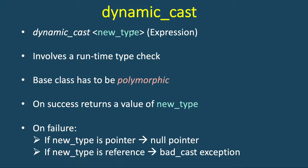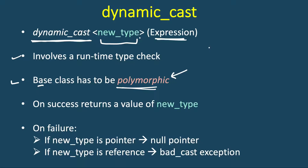Now let's look at the syntax of dynamic_cast, which is similar to other casts. We have the dynamic_cast keyword, then we specify the new type to which we want to convert — this type can be either a pointer or a reference — and then we have the expression or variable. It involves a runtime type check, and one condition is that the base class must be polymorphic, meaning it must have at least one virtual function. If we don't define any virtual function inside the base class, then dynamic_cast will fail at compile time itself, saying the base class is not polymorphic.